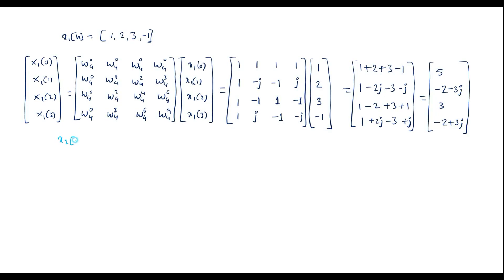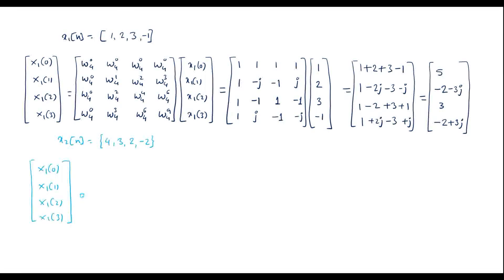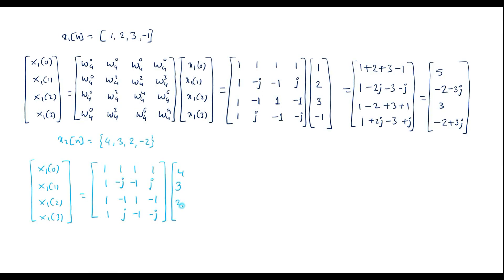Now consider the second sequence x2(n) = 4, 3, 2, minus 2. We compute X2(0), X2(1), X2(2), X2(3) using the same twiddle factor matrix with values 1, 1, 1, 1 in the first row; then minus j, minus 1, plus j; then minus 1, 1, minus 1; then j, minus 1, minus j. The input column is x2(0)=4, x2(1)=3, x2(2)=2, x2(3)=minus 2.